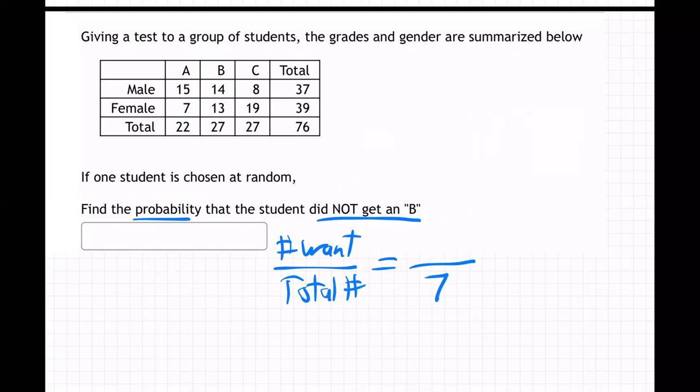So the total number, that one's easy enough, that's the 76. That's the total number of students in this class. So out of those 76 students, we're going to select one student at random. What's the chance we're going to get somebody who did not get a B?